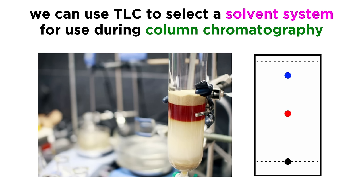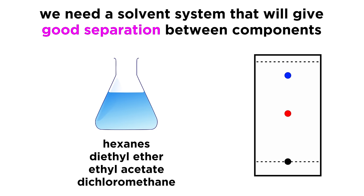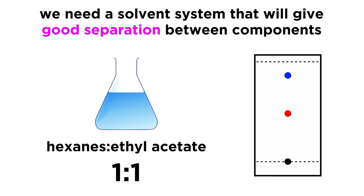Another reason we would use TLC is to select a solvent system for column chromatography, which is a large scale separation technique. We will want to find a solvent system that maximizes the distance between two components on a developed plate, because that will best enable us to separate them in a column, which we will learn about in the next tutorial. This solvent system is typically a mixture of two or more solvents, like hexanes, ether, ethyl acetate, or dichloromethane. We may have to mix hexanes and ethyl acetate in a one-to-one ratio, or two-to-one, or five-to-one.